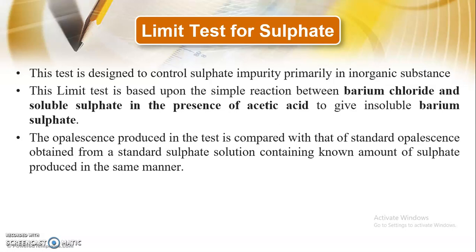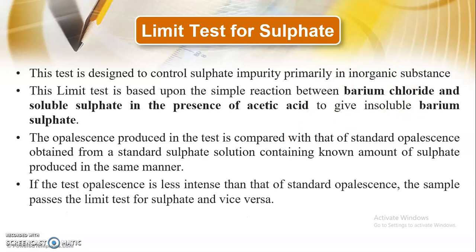The opalescence of barium sulphate produced in the test is compared with the standard opalescence obtained from the standard sulphate solution. The standard opalescence is formed from the reaction between the standard sulphate solution — consisting of a known amount of sulphate — and barium chloride. If the test opalescence is less intense than the standard, the sample passes the limit test; if it is more, the sample does not pass.